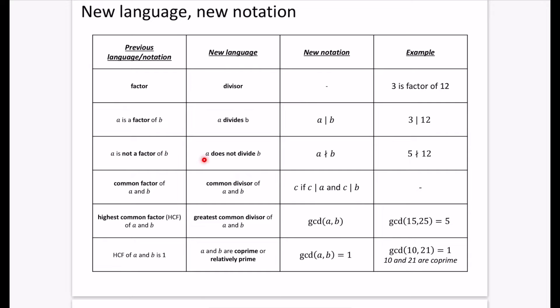If it is not a factor of b, we say it does not divide b, we just do this line, but we just draw a little knot line through it like this. So same kind of process. So 5 is not a divisor of 12, or we could say 5 does not divide 12. In other words, 5 is not a factor of 12.